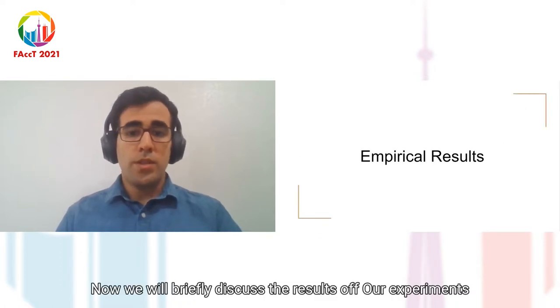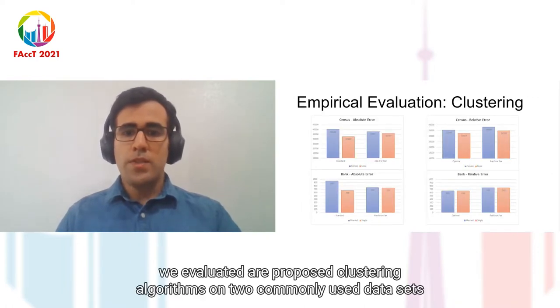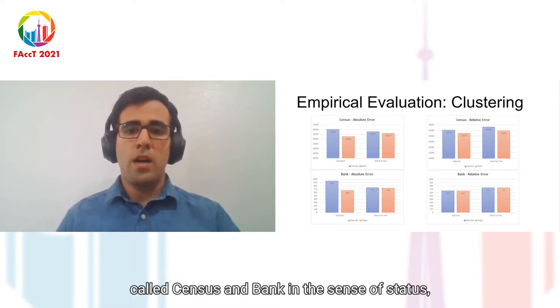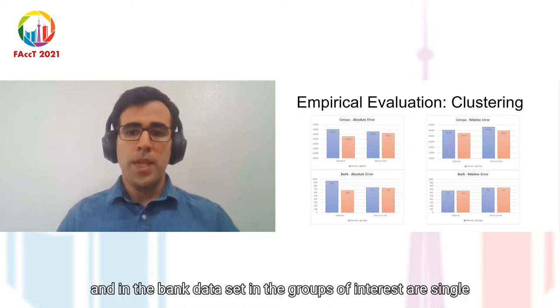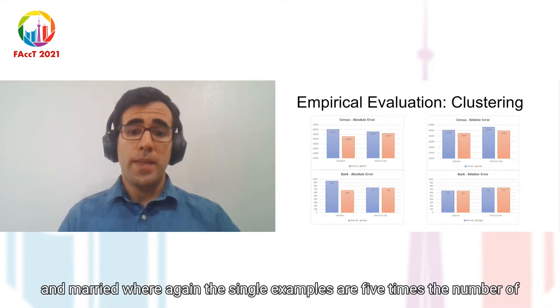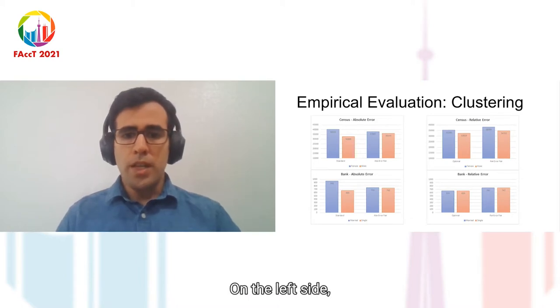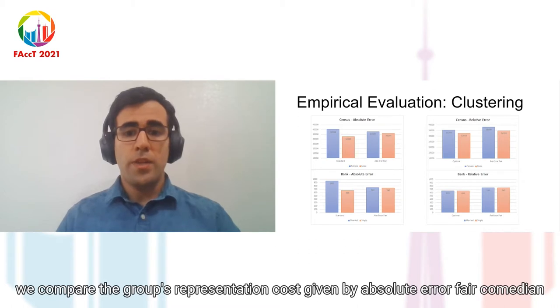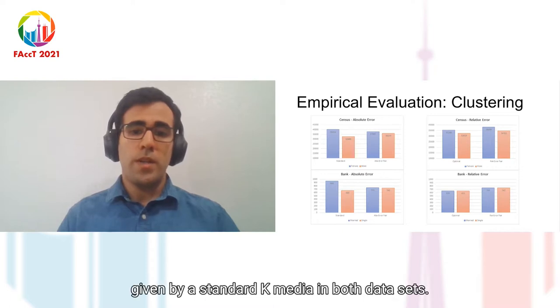Now we will briefly discuss the results of our experiments. We evaluated our proposed clustering algorithms on two commonly used data sets called census and bank. In the census data set, we consider two groups, male and female with a sampling ratio of 5 to 1. And in the bank data set, the groups of interest are single and married where, again, the single examples are five times the number of married ones. In the two figures on the left side, we compare the group's representation costs given by absolute error fair K median to their corresponding values given by a standard K median. In both data sets, in the standard K median, the minority group suffers a much larger average cost compared to the majority group.